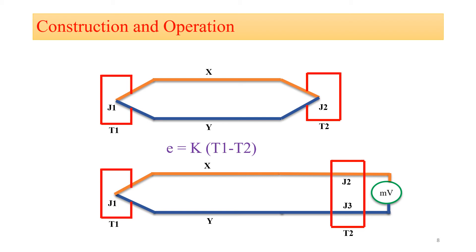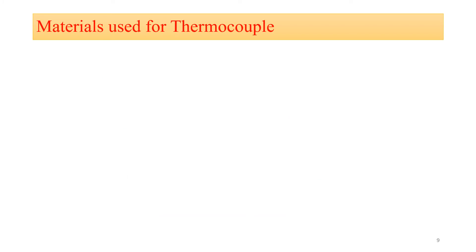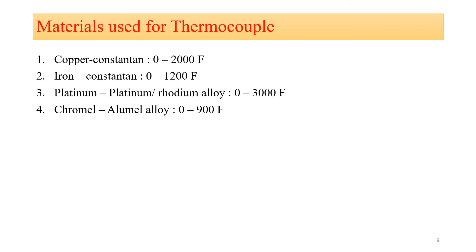A millivoltmeter is used to measure the thermally generated EMF. The thermocouple elements are enclosed in a housing assembly for protection, and the assembly is called a thermocouple probe. The different material combinations used for construction are: copper-constantan (temperature range 0–200°F), iron-constantan (0–1200°F), platinum and platinum-rhodium alloy (0–3000°F), and chromel-alumel alloy (0–900°F).